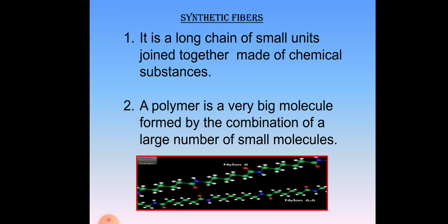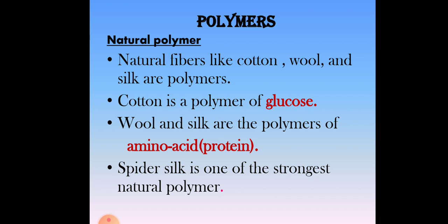Look at the picture. Natural fibers like cotton, wool, and silk are polymers. Cotton is a polymer of glucose. Wool and silk are polymers of amino acids, which are proteins present in the animal body. Spider silk is one of the strongest natural polymers.